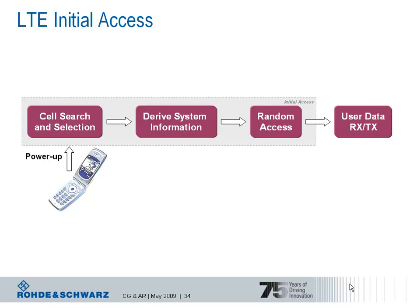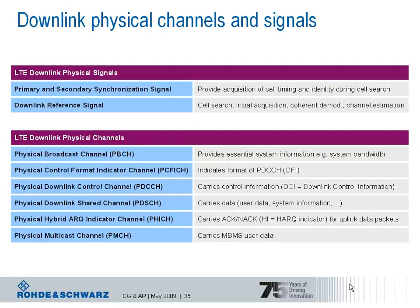Before we look at each of these steps separately, we need to talk about the physical signals and channels used in the downlink. LTE uses in the downlink two types of signals: signals which are purely generated in layer 1, the physical layer. These signals are the primary and secondary synchronization signal as well as downlink reference signals. Further, LTE uses physical channels which derive the information data to be transported from higher layers, layer 2 and layer 3.